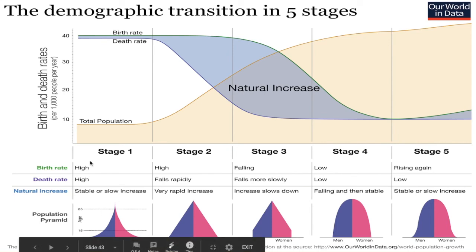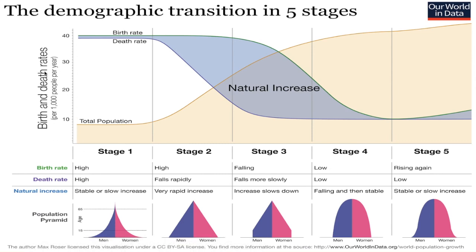Let's just take this step by step because there's a lot here. On the y-axis, you've got birth and death rates. So these numbers up here would be high birth and death, and then starting down here would be zero. You've also got five stages on the x-axis — stage one, two, three, four, and five. And we'll talk about what each of those stages means.